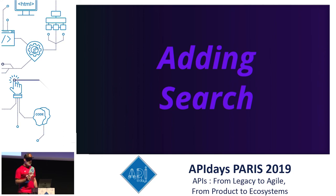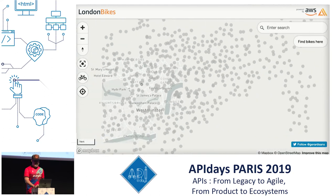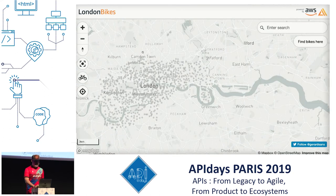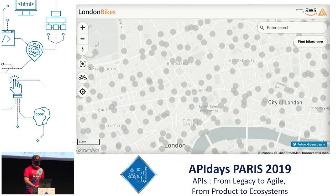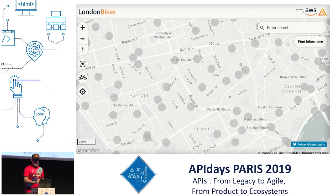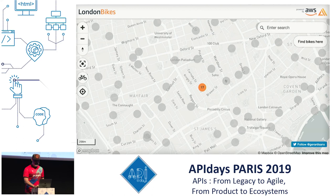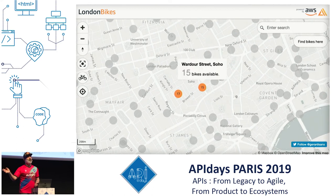Let's add the search feature — this is the most interesting bit. We have the map with all dock station information. I can point to one of these dock stations, interact with it, and it will make the call because now I know the ID. It gets the number of bikes available — this is live, coming from the Transport for London API. If I query another station, it just runs that query. I'm just interacting with the map.